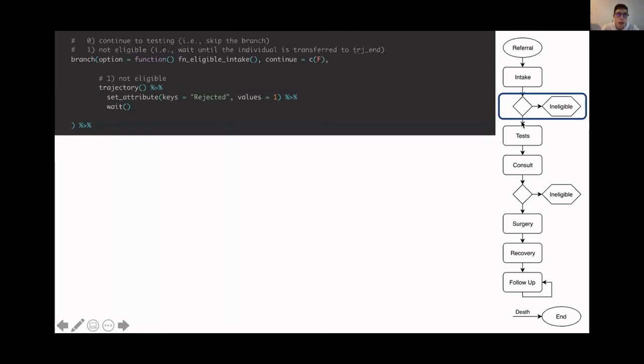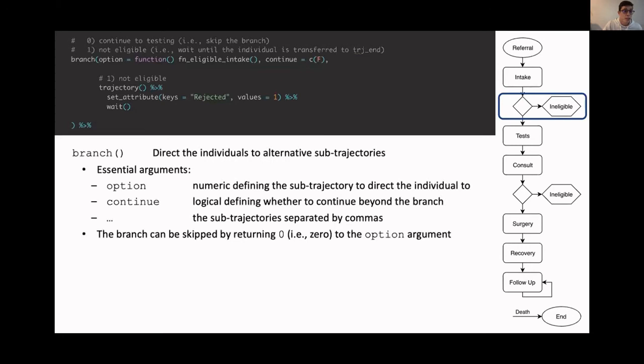Next up is the branch. As you may remember, some individuals are ineligible and they should not continue in the pathway. To implement such a branch, we use the branch function. That function directs individuals to alternative sub-trajectories. The arguments for this are the option, which basically specifies the number of the sub-trajectory in the branch the individual should go to, and it continues specifying whether, after completing the sub-trajectory, the individual should stay there or whether the individual should continue. And then the dots represent the different trajectories separated by the branch.